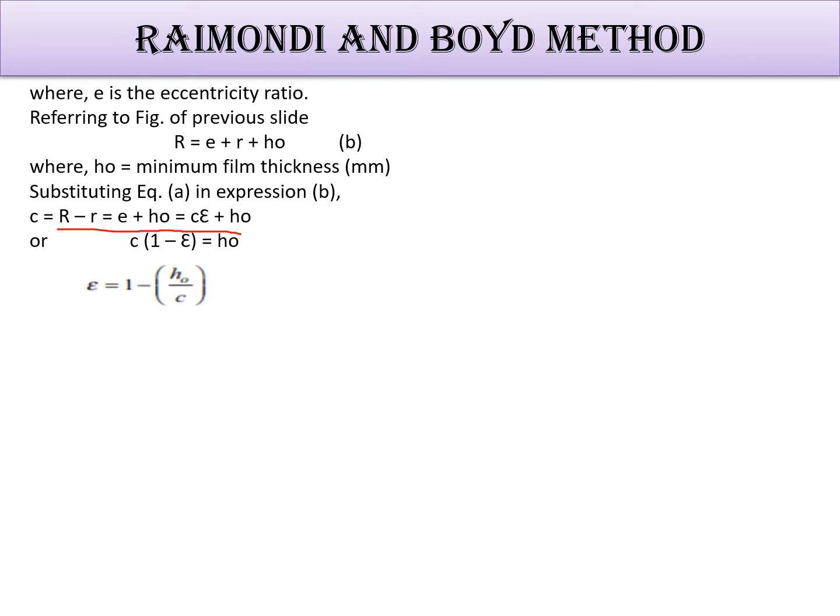Or you can say c equals one minus epsilon, epsilon equals h₀. So epsilon equals one minus h₀ by c. So the quantity h₀ by c is called the minimum film thickness. Okay, this is the minimum film thickness variable.